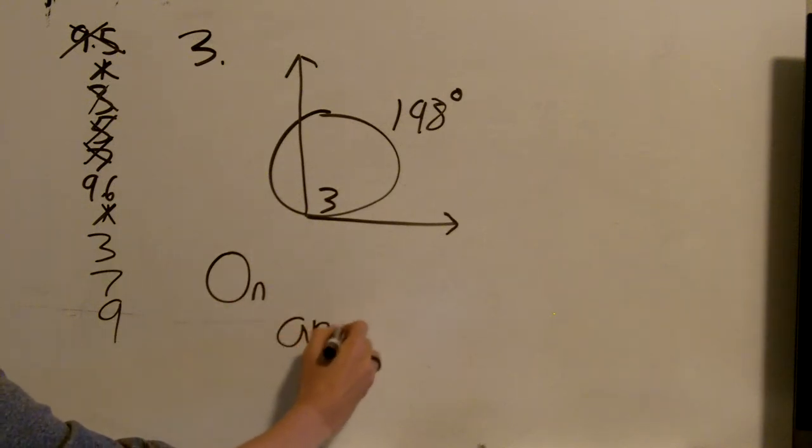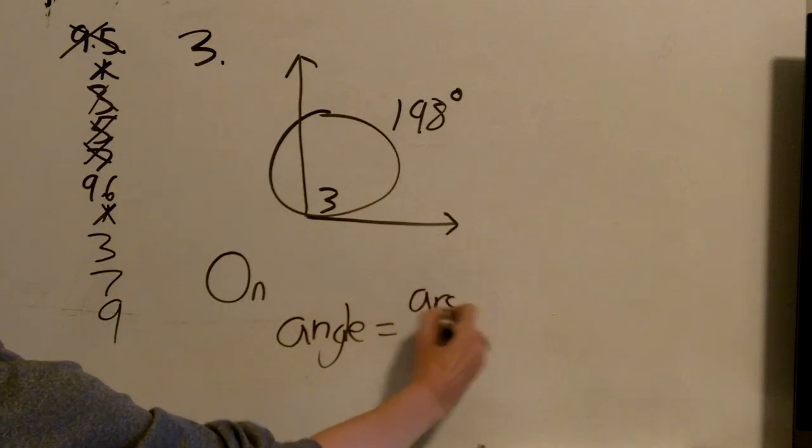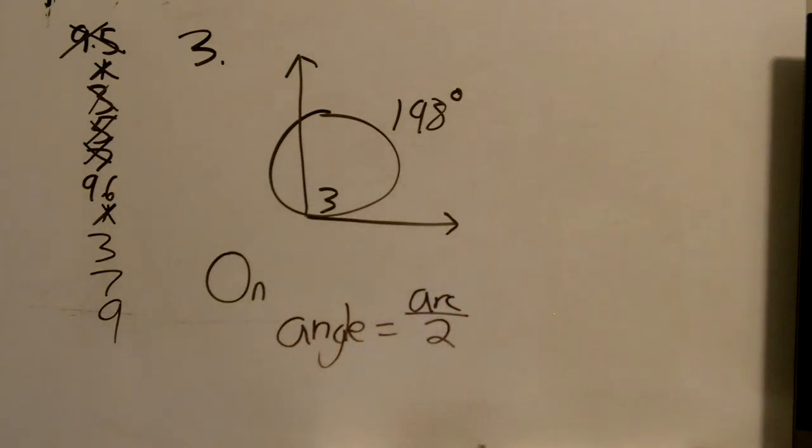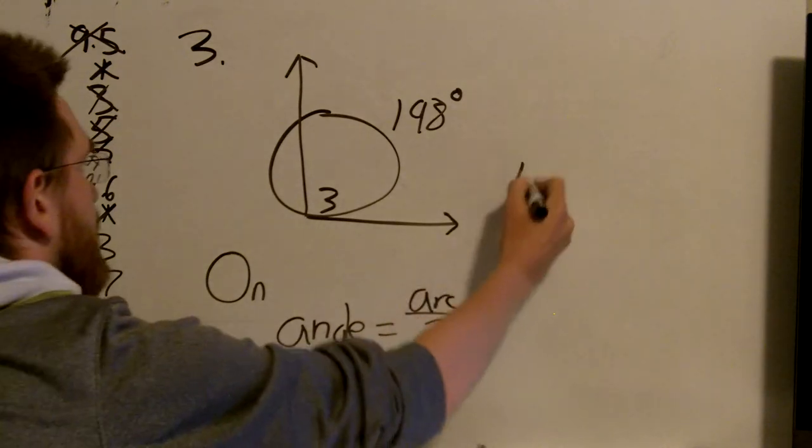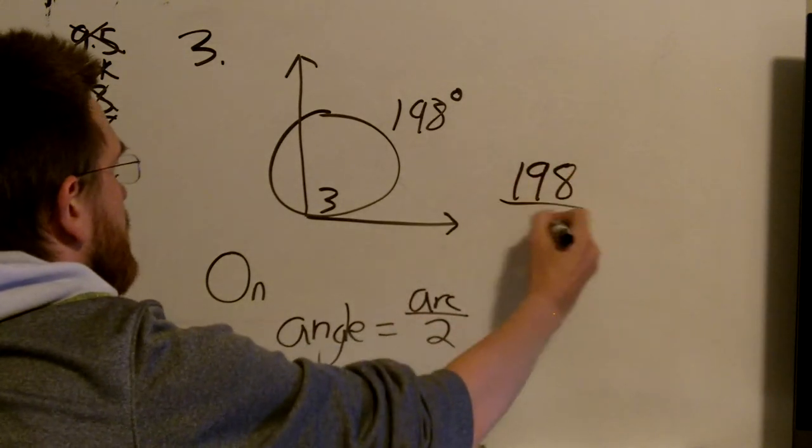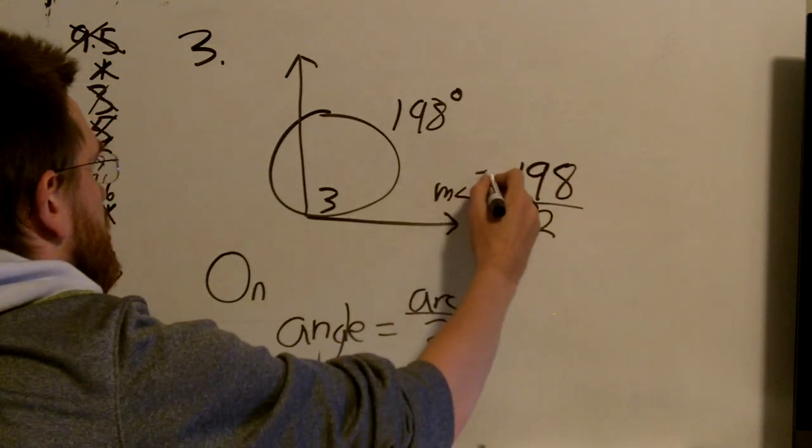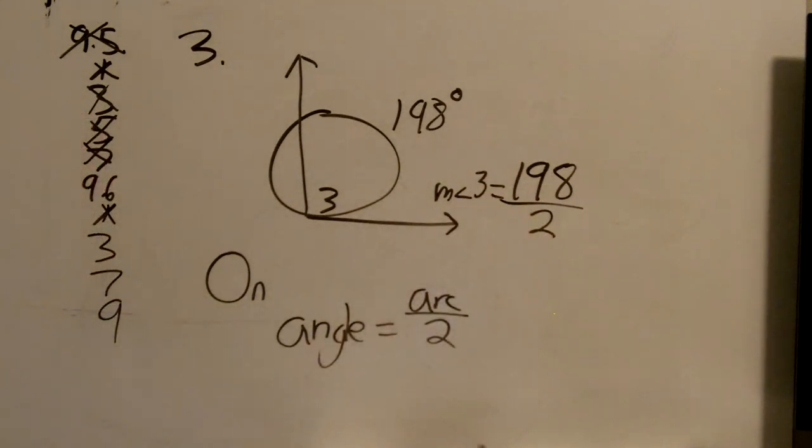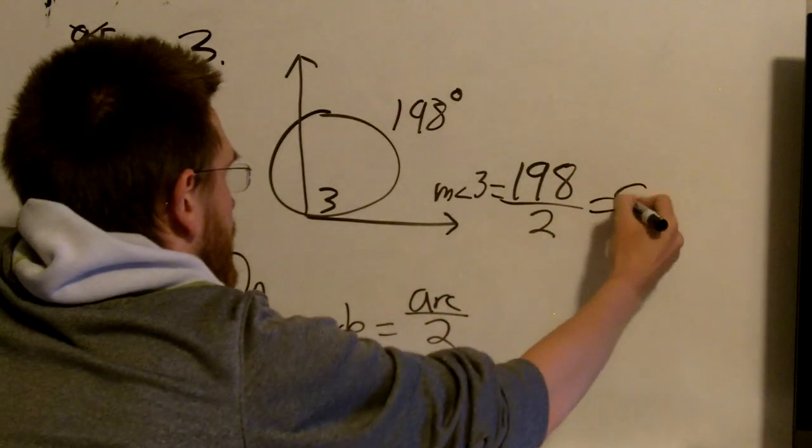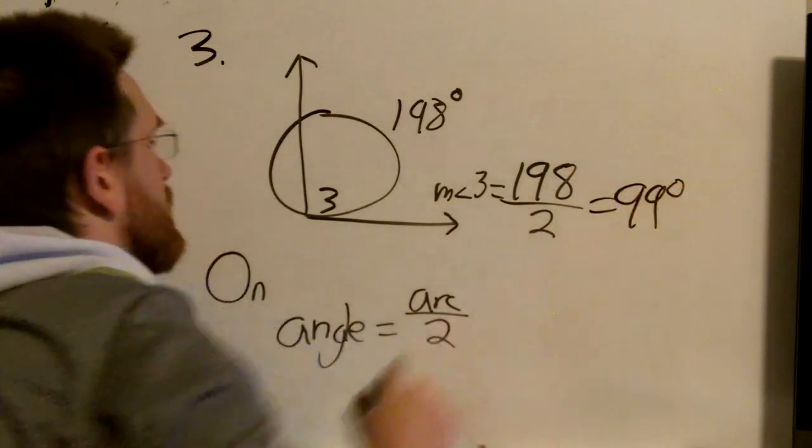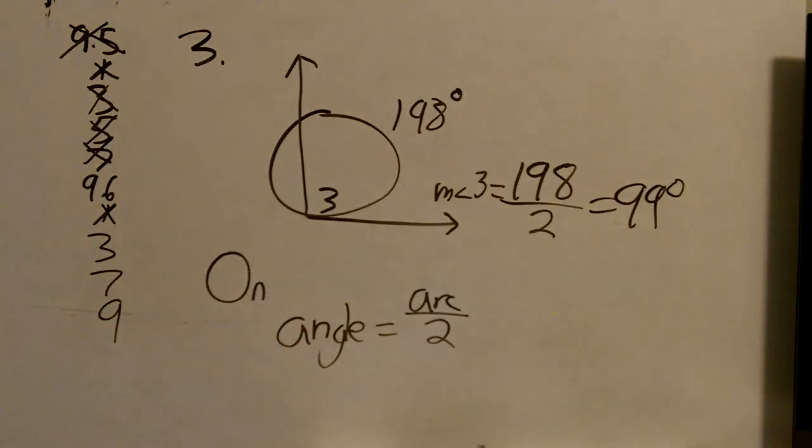For on the circle, we do angle equals arc divided by 2. So this one, I just take the arc that I'm given, 198 divided by 2 equals the angle. So 198 divided by 2 equals 99. So angle 3 is 99 degrees.